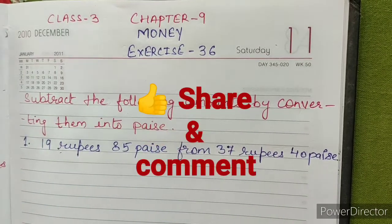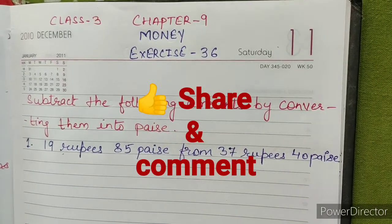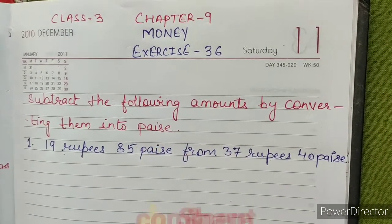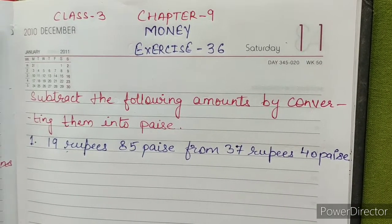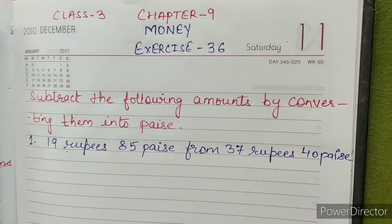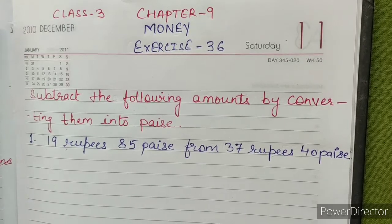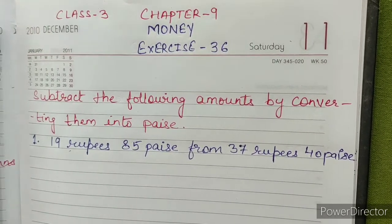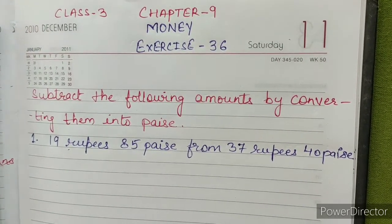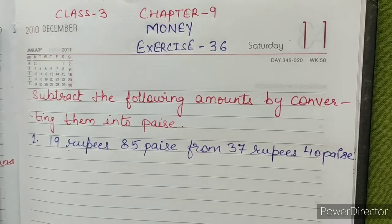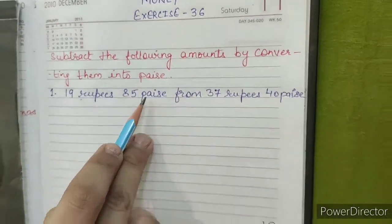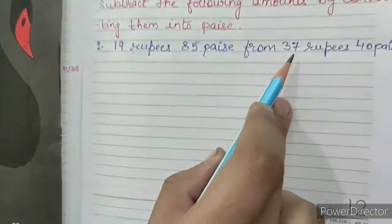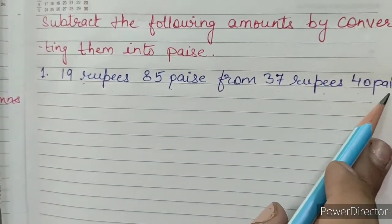Hello students, welcome back to our new video session. This video is for Class 3, Chapter 9: Money, Exercise 36. Subtract the following amounts by converting them into paise. Question number 1: subtract 19 rupees 85 paise from 37 rupees 40 paise.